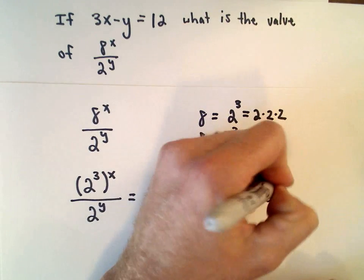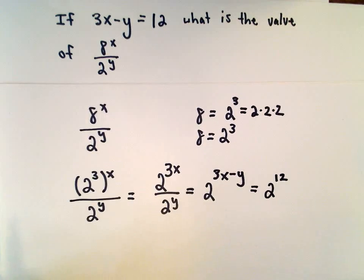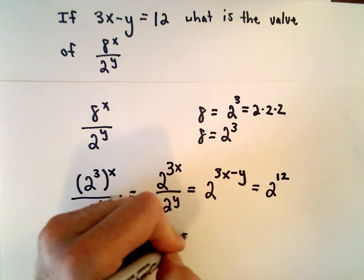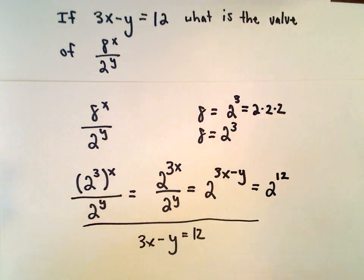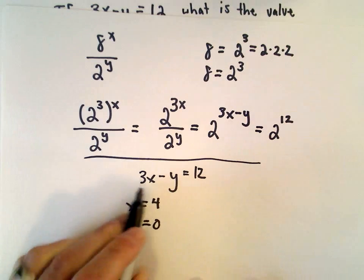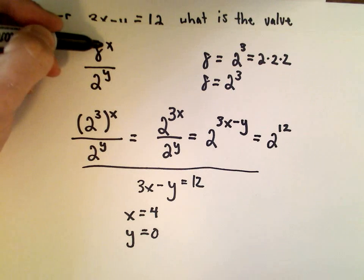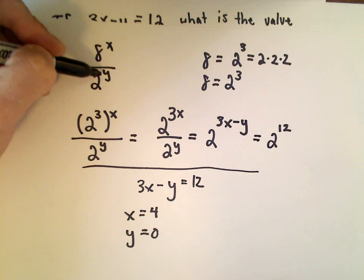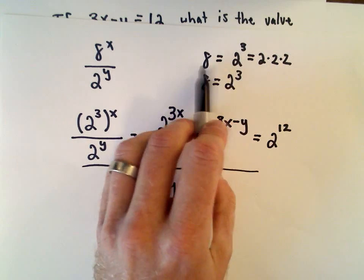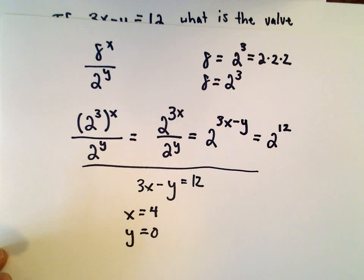So we're simply left with 2 raised to the power of 12, and that is our solution — answer choice A is correct. You could also verify this by plugging in values; for example, if x equals 4 and y equals 0, then 3 times 4 minus 0 gives you 12. Substituting in, you'd have 8 to the 4th over 2 to the 0, and reducing by writing 8 as 2 to the power of 3 would give you the same exact answer.